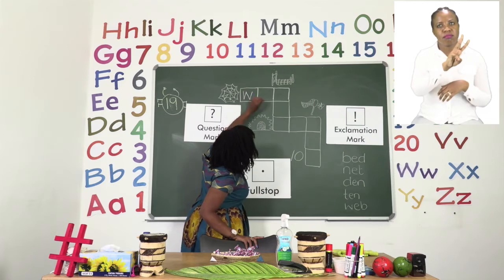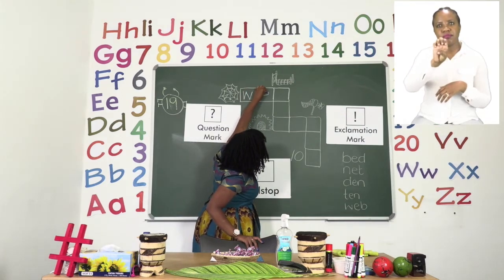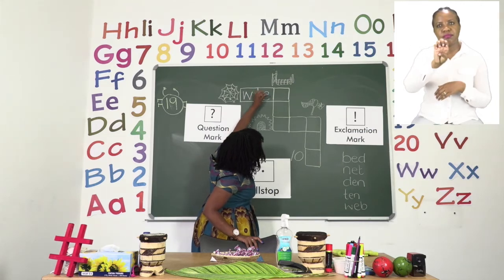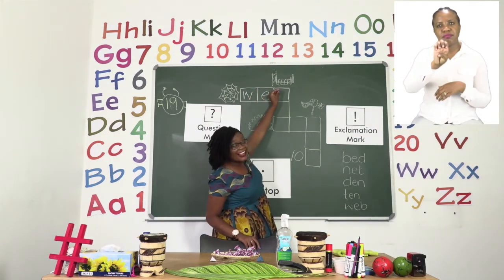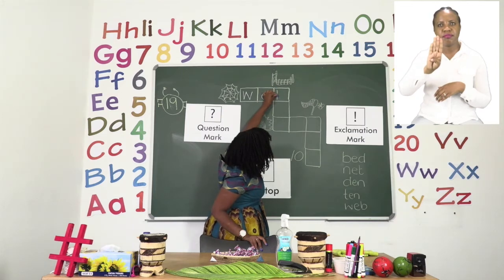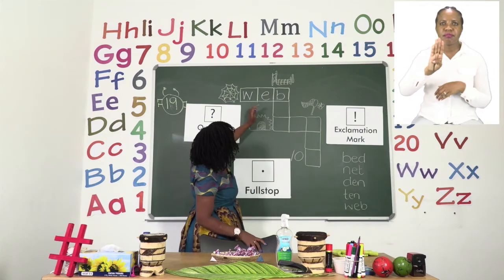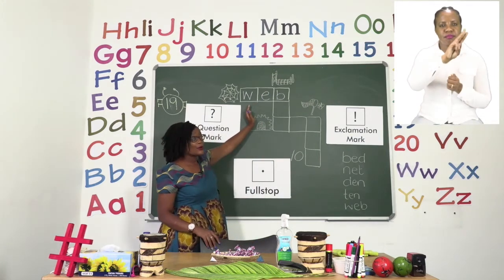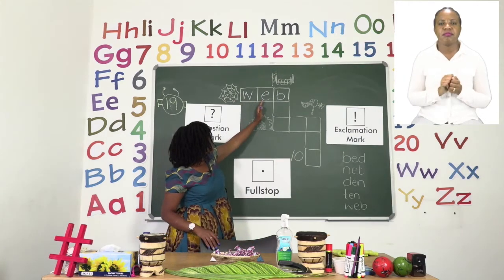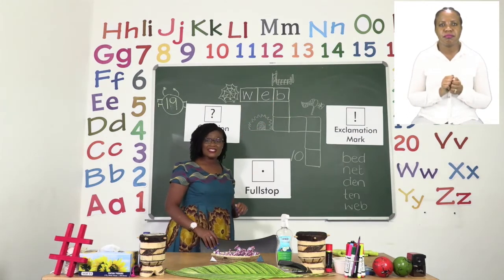We will start with the W, then the E, and now the B. Very good. Now let us read our word — W, E, B — web. Let's move on to the next one.